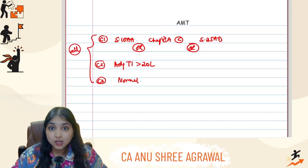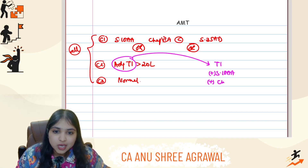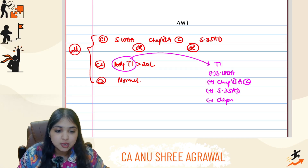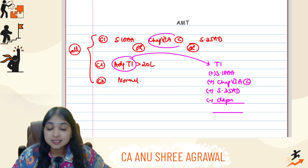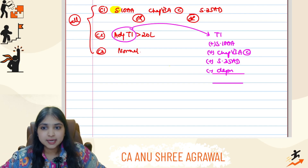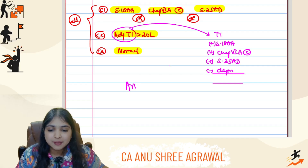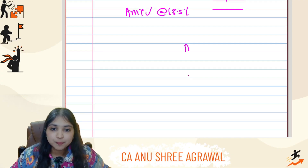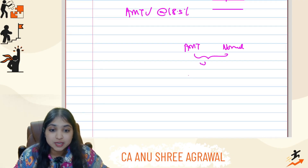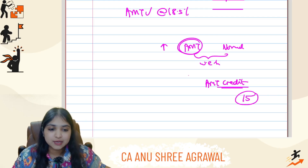If the assessee is following Section 115BAC, then no AMT. Adjusted total income means you take the total income calculated as per normal provisions, then add back the 10AA tax holiday, add back Chapter 6A Part C deductions, and add back Section 35AD deduction. On the 35AD asset, remember to claim depreciation. The net number you get is your adjusted total income. The three Chapter 6A Part C sections in your syllabus are 80JJAA, 80QQB, and 80RRB. If all three conditions are met, AMT applies at the rate of 18.5% — and you will pay AMT or normal income tax, whichever is higher. If AMT is higher, the difference becomes AMT credit, which has a life of 15 years.